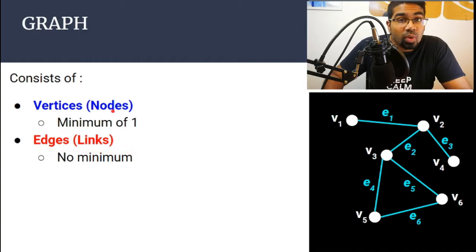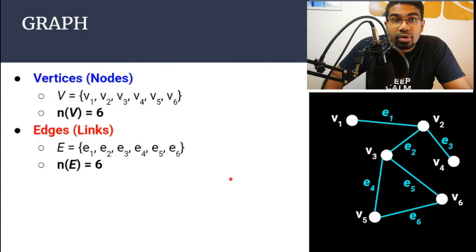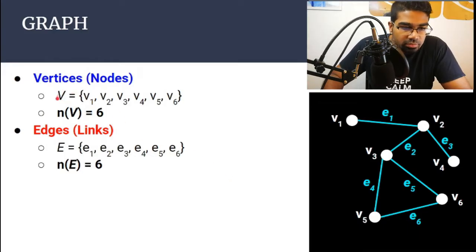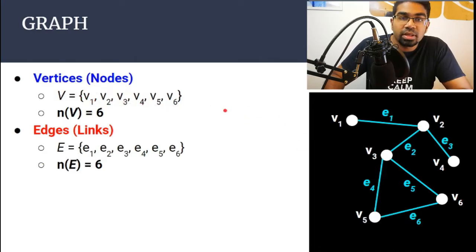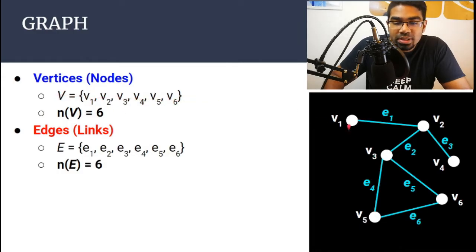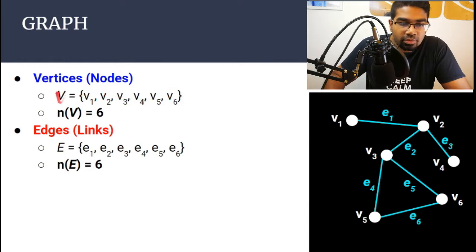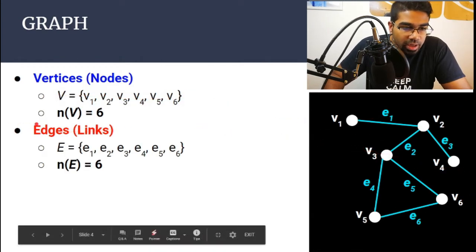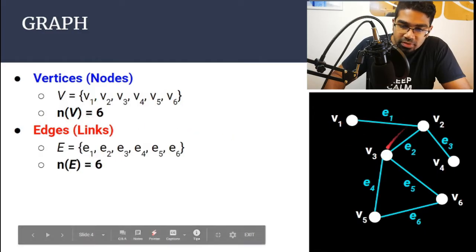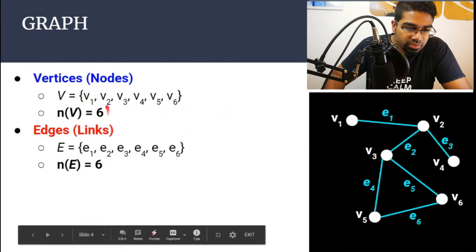Let's look at how to represent vertices and edges. We represent in set notation: V equals the named vertices. Here it is V1 to V6 — sometimes it can be in letters, A to E. All we have to do is represent each vertex as an element in a set. This is the set of vertices in this graph. N(V) is the number of vertices, so the total number of vertices here is 6.